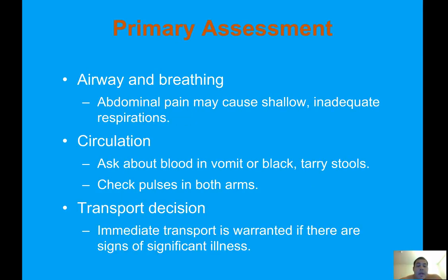Primary assessment: airway and breathing — abdominal pain may cause shallow, inadequate respirations. For circulation, ask about blood in vomit or black tarry stools, and check pulses in both arms. AAA can cause fluctuations in blood pressure between both arms. Transport decision: immediate transport is warranted if there are signs of significant illness.